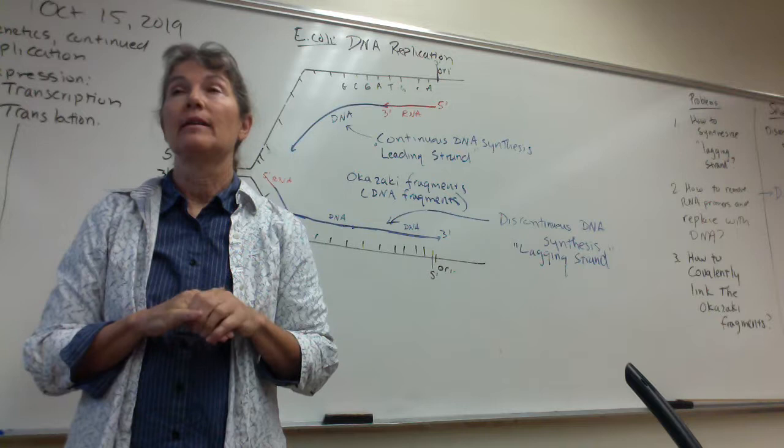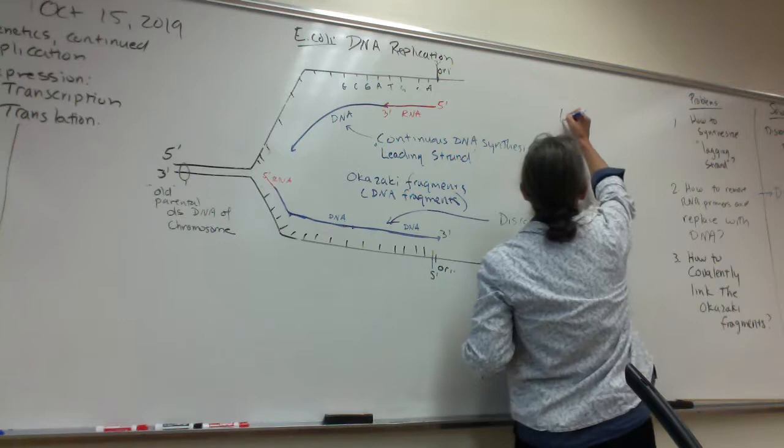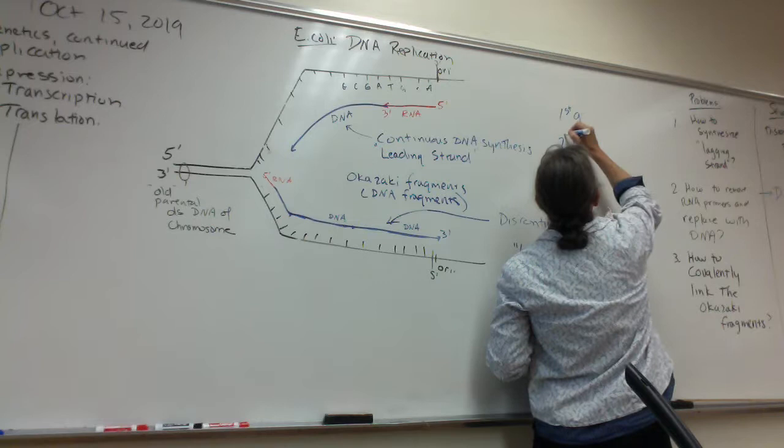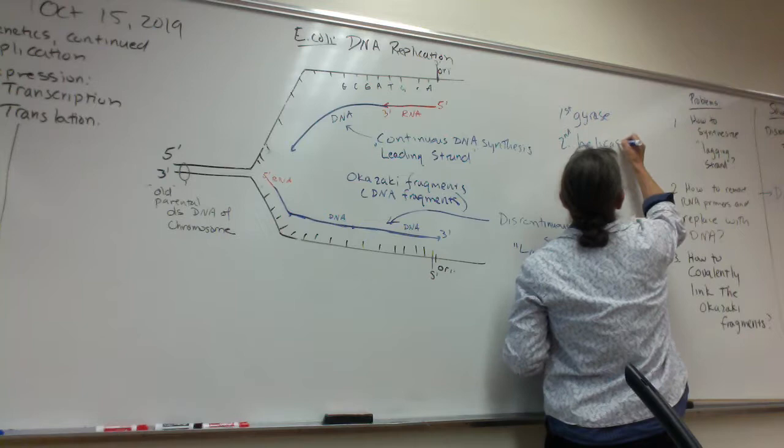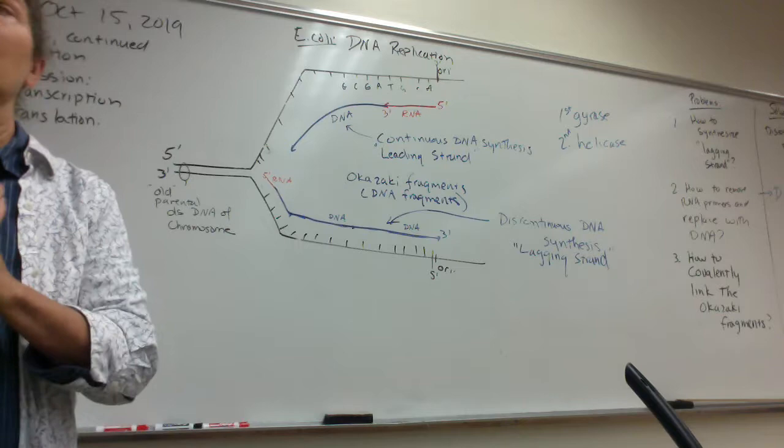I always mix up gyrase and helicase. Here's a tip: G comes before H in the alphabet. G is for gyrase, H is for helicase. Gyrase comes first — it relaxes the supercoiling — then helicase unzips the DNA. First is gyrase, then helicase.